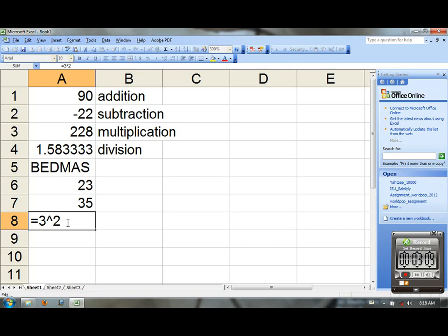If we wanted, say, 3 to the 4th to get 81, we would do this. So the exponent always goes after the caret. The base of the exponential expression goes before.